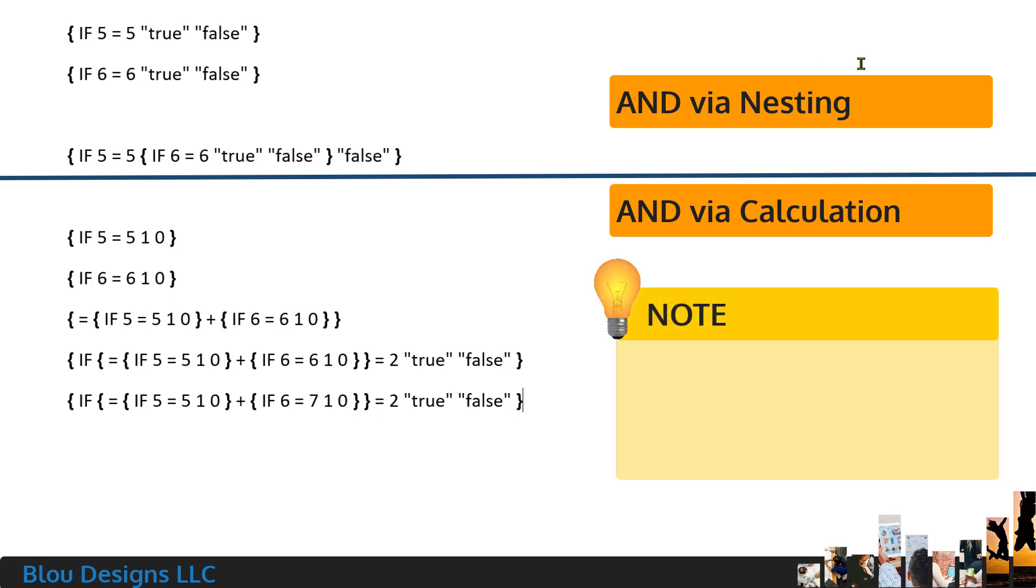When I'm dealing with multiple criteria, I prefer this method over nesting because I find it easier to update if I change what I want to have happen when the evaluation is false. I only have to change it once instead of every time the false text appears in all of the nested checks.